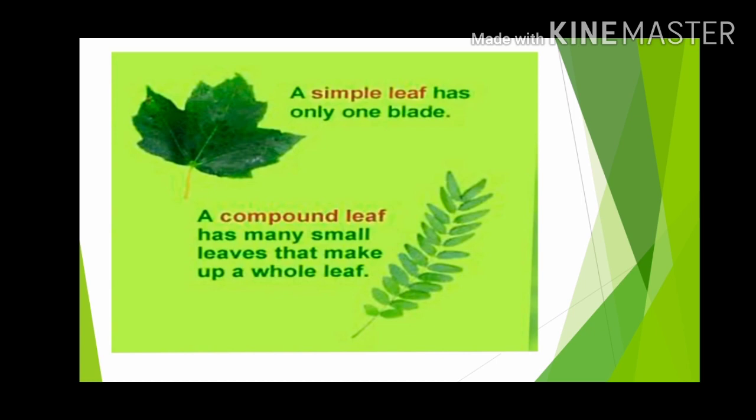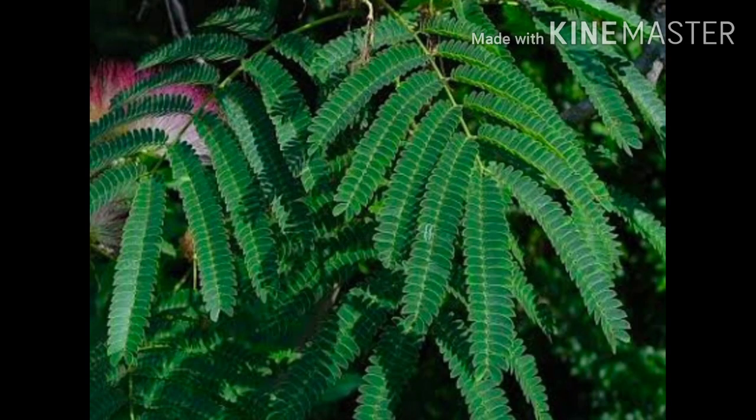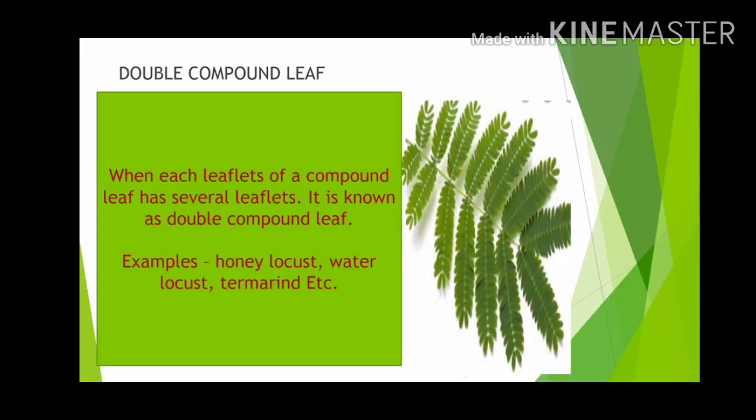Now observe this picture and tell me the type of leaf. Yes, you are correct — it is not a compound leaf, it is a double compound leaf. When each leaflet of a compound leaf has several leaflets, it is known as a double compound leaf.